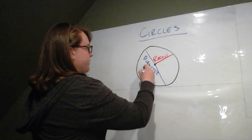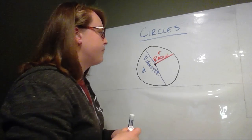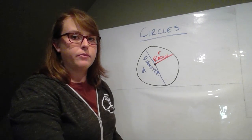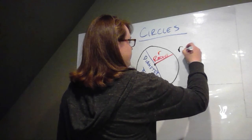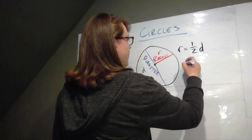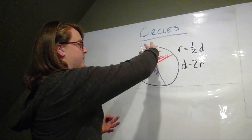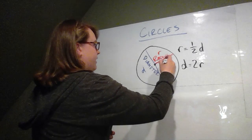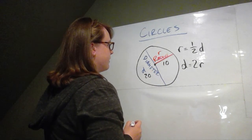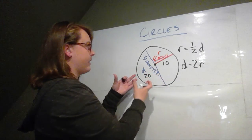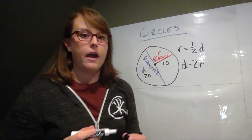Diameter is usually represented with a lowercase d. Radius is usually represented with a lowercase r. A few important things to know about the relationship between radius and diameter: the radius is half of the diameter, and the diameter is twice the radius. The radius is halfway across, the diameter is the whole way across. So for example, if my radius was 10, then my diameter would be 20. If my radius was 15, my diameter would be 30. If my diameter was 12, my radius would be 6. They have that relationship that one is half of the other.